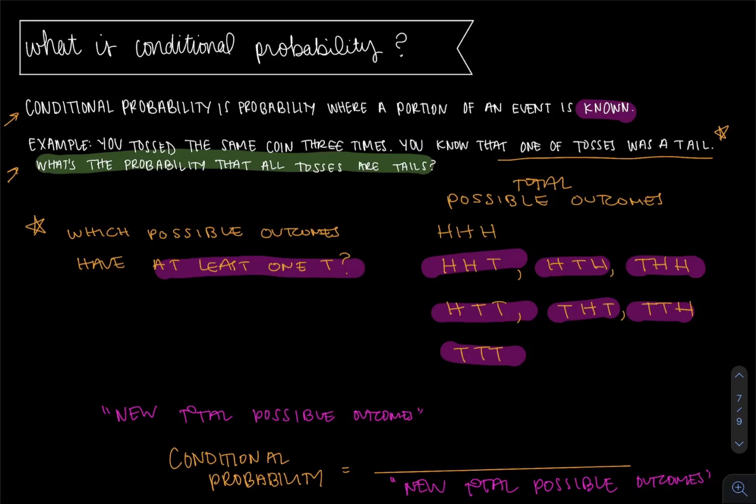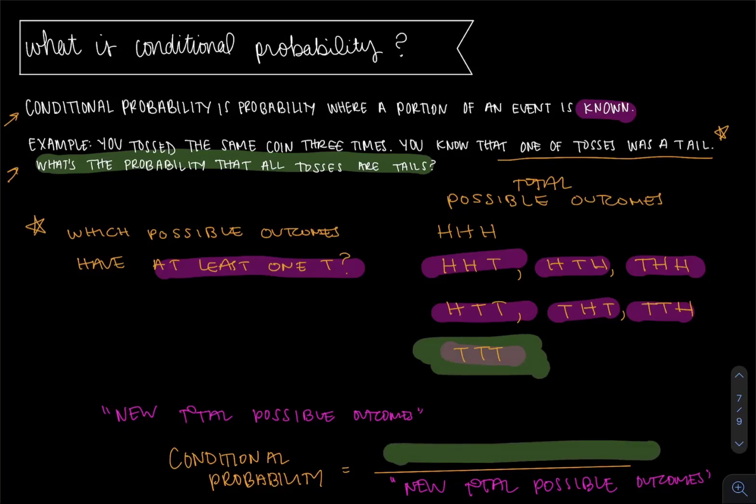And our numerator is answering the question, what's the probability that all tosses are tails? You look in the pink values and find the possible outcomes that give you all three tails, and that's only tails, tails, tails here, goes in the numerator. This is our new favorable outcomes.